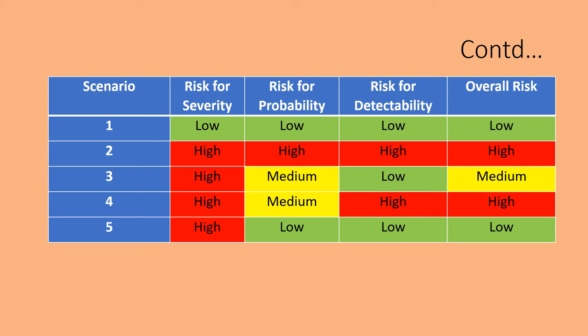In scenario 3, the risk for severity is high, but the probability is medium — meaning even though the risk for severity is high, the probability of occurrence is not that high. And risk for detectability is low, meaning the severity can be detected very quickly. So the overall risk can be classified as medium.